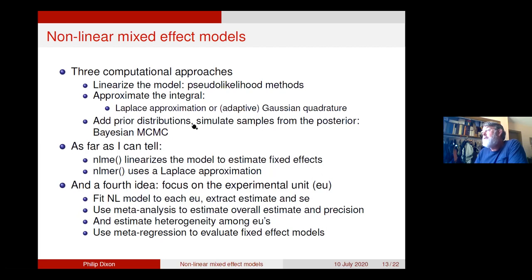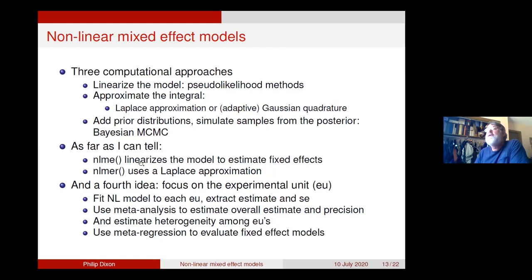Or we go Bayesian: add a prior distribution on all the parameters, and use a Markov chain Monte Carlo algorithm to simulate samples from the posterior distribution — avoiding doing that integral by writing a Markov chain that generates samples from the integrated marginal distribution. The two major software packages take different approaches: the NLME package linearizes the model, whereas the NLME4 package uses a Laplace approximation.